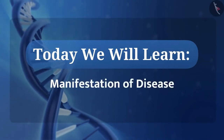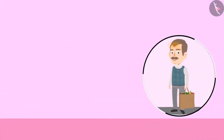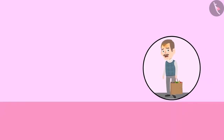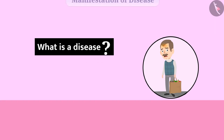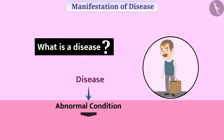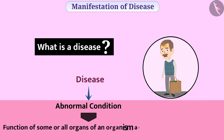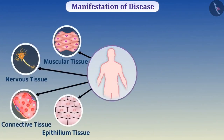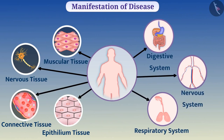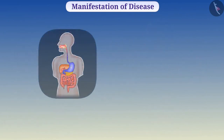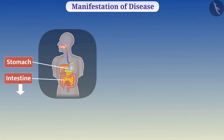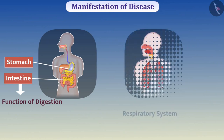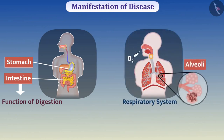What is a disease? Disease is an abnormal condition that affects the function of some or all organs of an organism in a negative way. Different tissues in our body combine and form different organ systems. For example, in the digestive system the stomach and intestine perform the function of digestion, and alveoli in the respiratory system exchange gases.